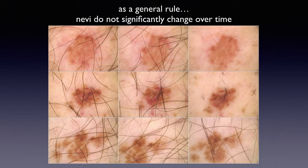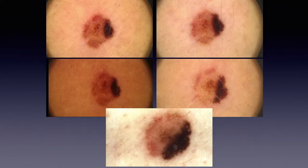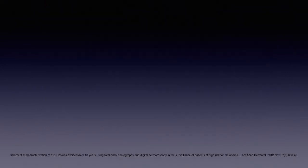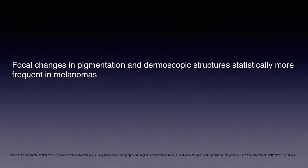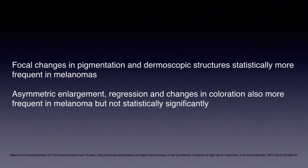This is an example of three nevi during a two-year follow-up — they did not change significantly over time. However, sometimes some of the changes can be found also in nevi, like in this compound nevus that was asymmetrically enlarging during follow-up. In the study by Salerni and co-workers, focal changes in pigmentation and dermoscopic structures were present in both melanomas and nevi, but were statistically more frequent in melanomas. Asymmetric enlargement, regression, and changes in coloration were also more frequent in melanoma, but not statistically significantly.